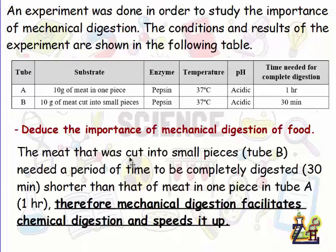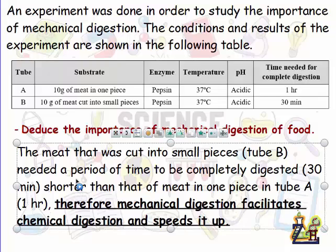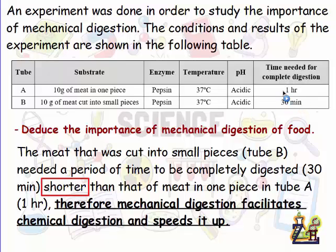The meat that was cut into small pieces needed only 30 minutes to be completely digested — a shorter period than that of the meat in one piece in tube A, which took one hour. Both were fully digested, but tube B took a shorter time, and this is related to the size of the pieces.